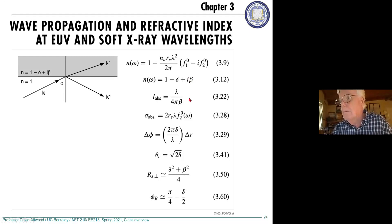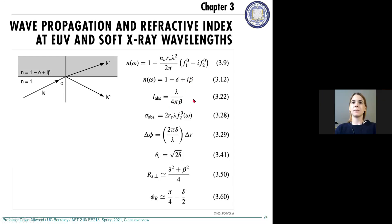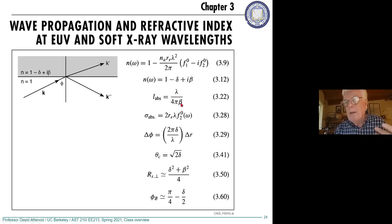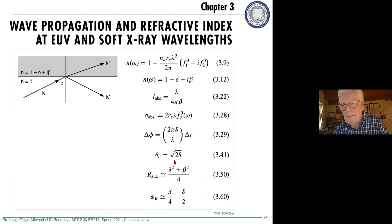At wavelengths below about 200 nm — in the ultraviolet — beta becomes really important. Green light is 520 nm; at 250 nm or 200 nm there's suddenly a lot of absorption. Beta is a way of tracking intensity as we move through the material. The absorption length — how far you go before a 1/e drop in intensity — depends on wavelength and beta, and beta contains the imaginary part of the atomic scattering factor.